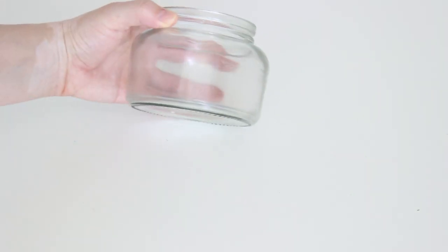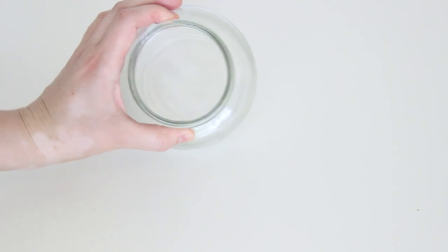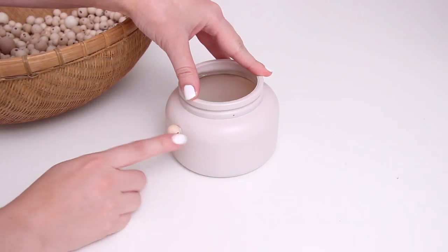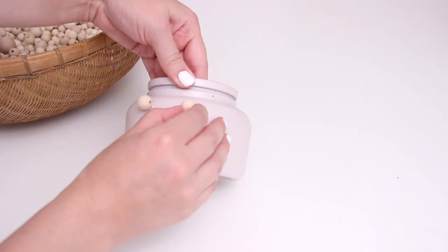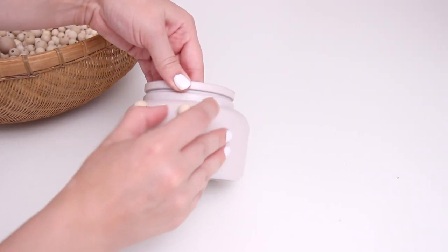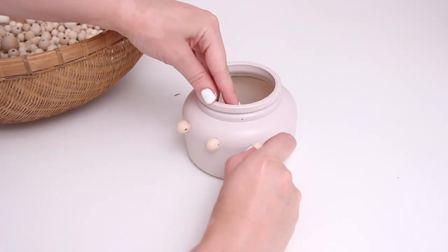For the last one, I had this old candle jar that I cleaned out and I really wanted to do something with it. So I gave it a coat of my pink chalk spray paint. And then I decided to take some of my wooden beads and start gluing them around the outside.